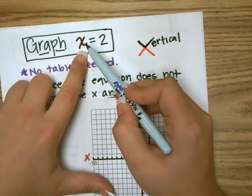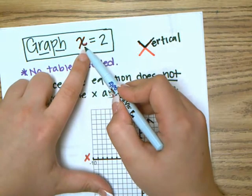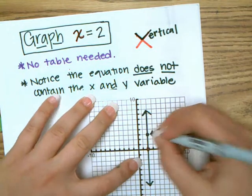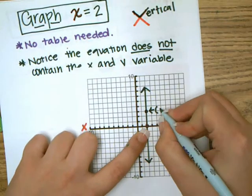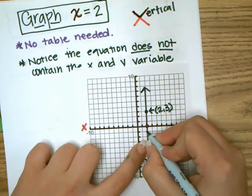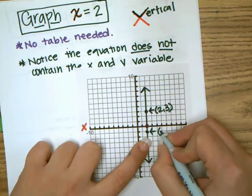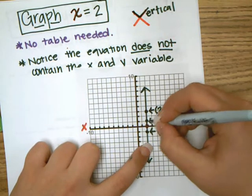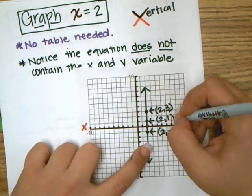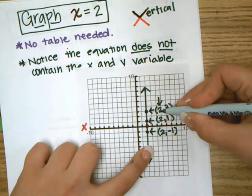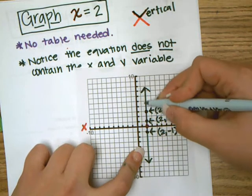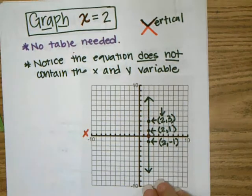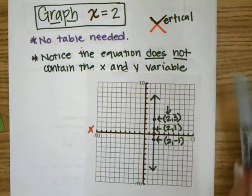The mathematical reason why it's a vertical line is because this is saying: graph all the points, all the solutions where x is two. So all these points — this point right here is at (2, 3), this point right here is at (2, -1), this point right here is at (2, 1). All the x values are always two on this line. That's why it's vertical.